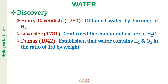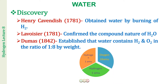Dumas in 1842 established that water contains H and O in the ratio of 1 to 8 by weight. We know that oxygen has an atomic mass of 16 AMU and hydrogen has an atomic mass of 1 AMU. So 2 AMU to 16 AMU gives us the ratio of 1 to 8 by weight.